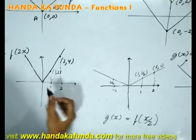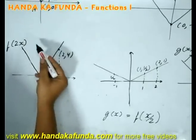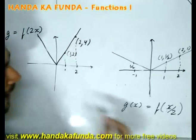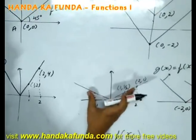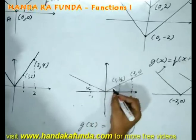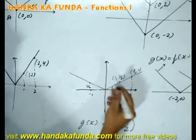However, if instead of multiplying it by something or raising it, if I divide it or I make it x by 2, then the graph will become broader. The slope will become lesser and lesser.